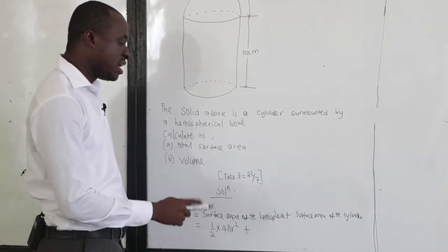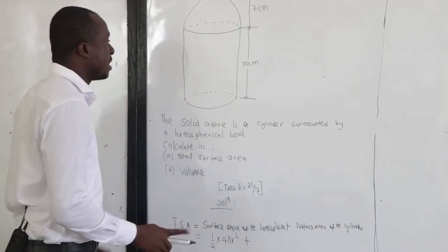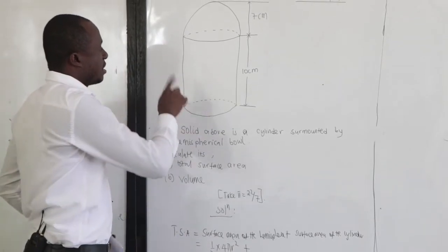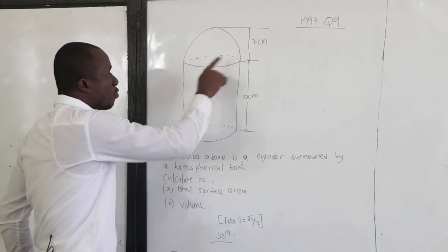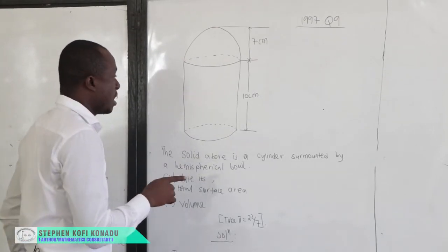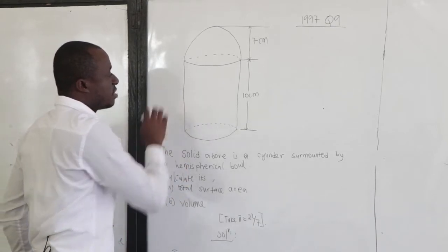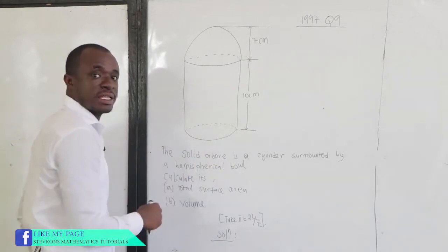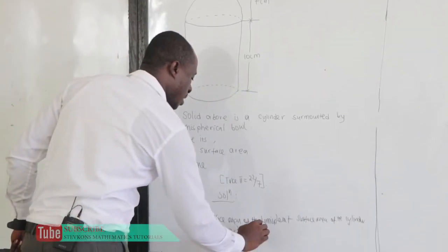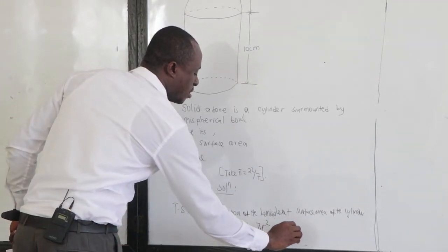The surface area of the cylinder. Let's look at the diagram. Clearly, because the cylinder is surmounted by a hemisphere, the top will be open. Hence, it is going to be the curved surface area plus the circular end at the bottom. So that will be equal to pi r squared plus 2 pi r h.